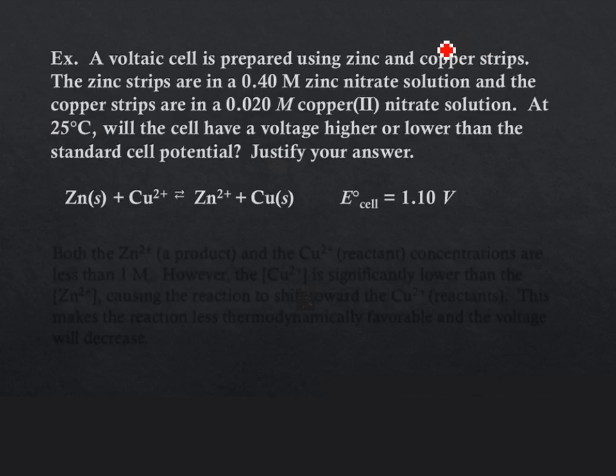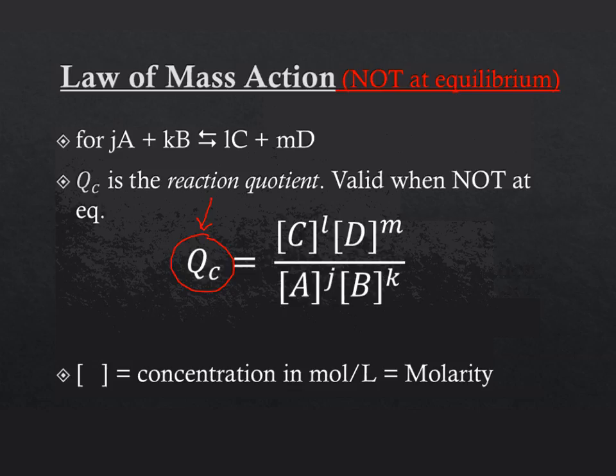A voltaic cell is prepared using zinc and copper strips. The zinc are at 0.4 molar, and here's the ions for zinc on the product side, and the copper strips are in a 0.02 molar solution. That's our reactant. At 25 Celsius, will the cell have a voltage higher or lower than standard cell potential? Justify your answer. This is a Nernst question.